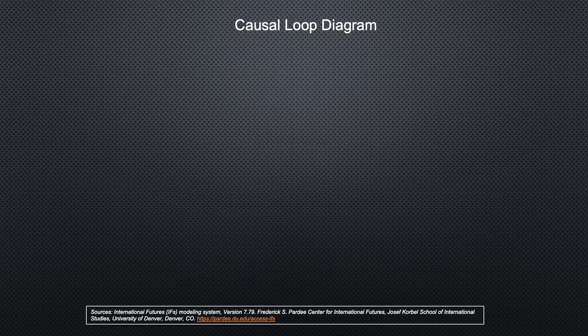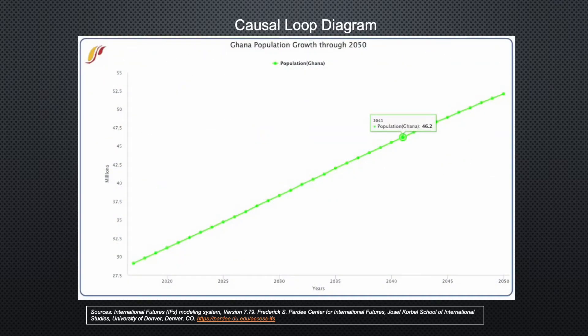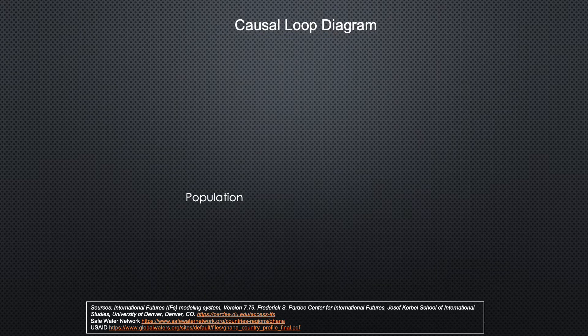The first component of the Ghana water crisis diagram is the population. If the current trends continue, Ghana's population will increase from 30 million to more than 50 million by 2050 — the population is projected to almost double in this time frame. Each of these individuals will need access to safe water to grow and develop to their full potential. As the population in Ghana increases, water demand will also increase.